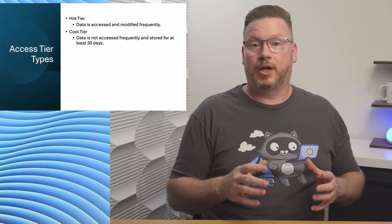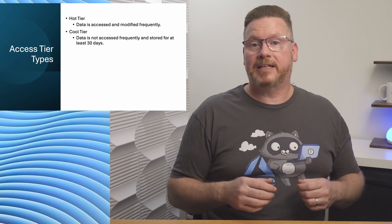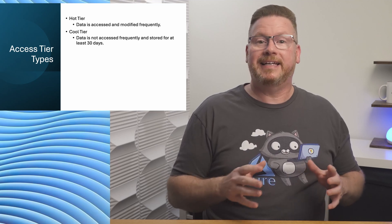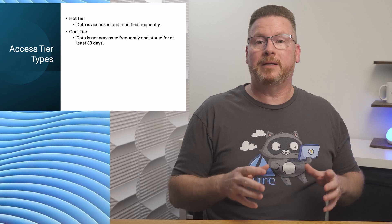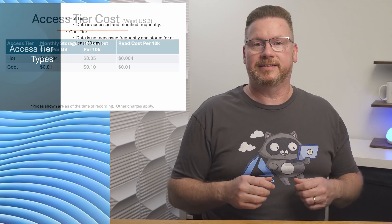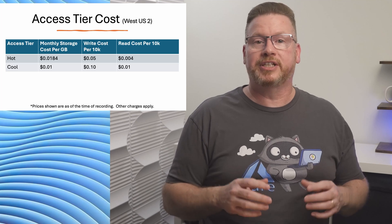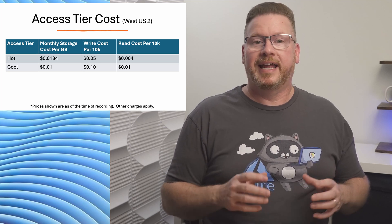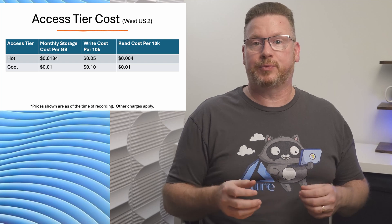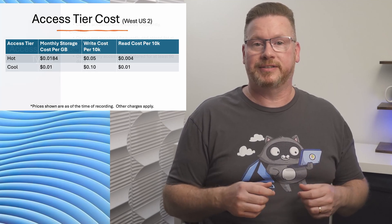Next is the cool tier. This has a lower storage cost but a higher access cost. This tier is optimized for storing data not accessed frequently. Data in the cool tier should be stored for a minimum of 30 days — there's a deletion penalty if removed before 30 days. The storage cost for cool storage is $0.01 per gigabyte, write access is $0.10 per 10,000 write operations, and read is $0.01 per 10,000 operations.